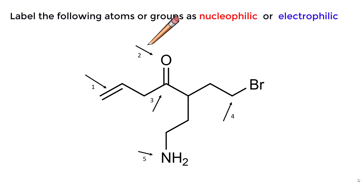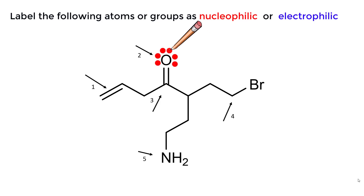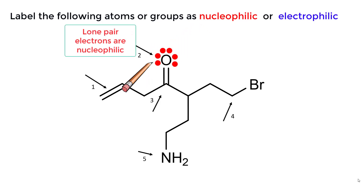The second arrow is pointing to the oxygen atom. Oxygen has pairs of electrons to donate to an electrophile and is therefore nucleophilic.